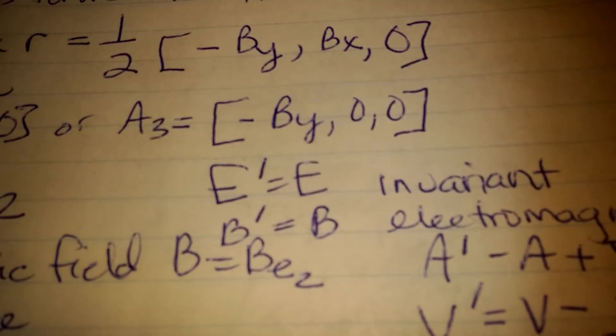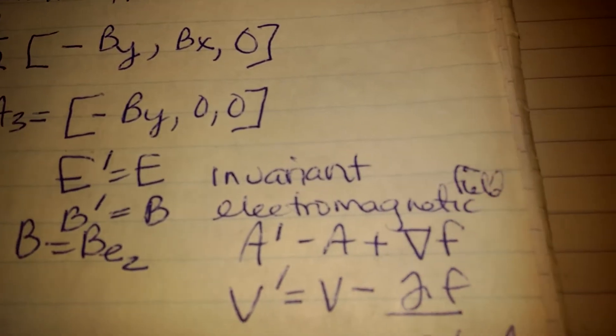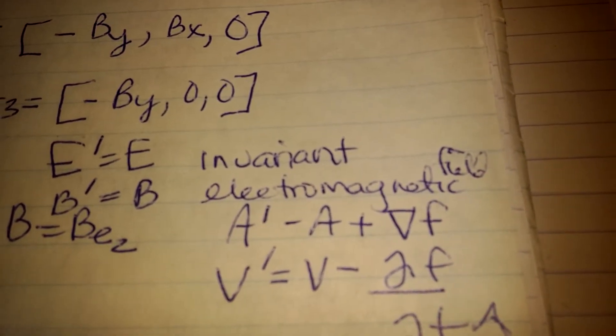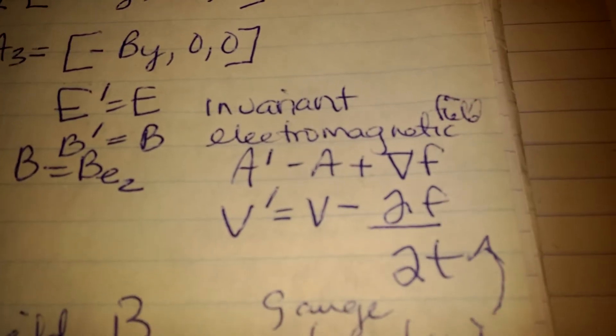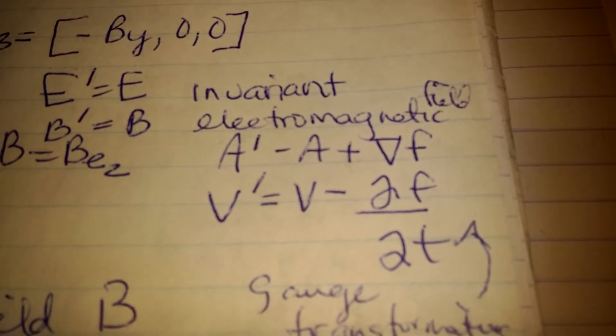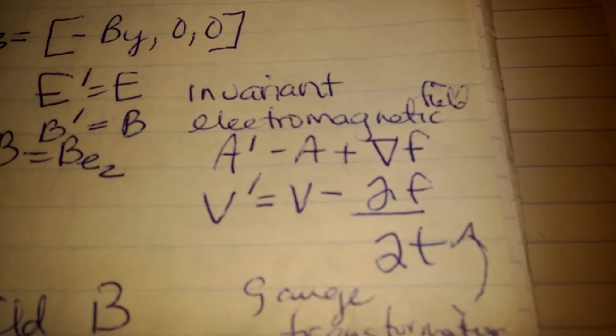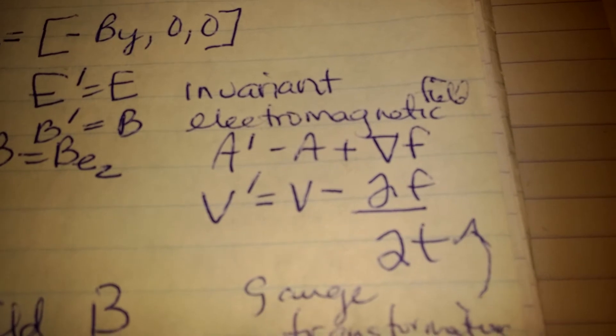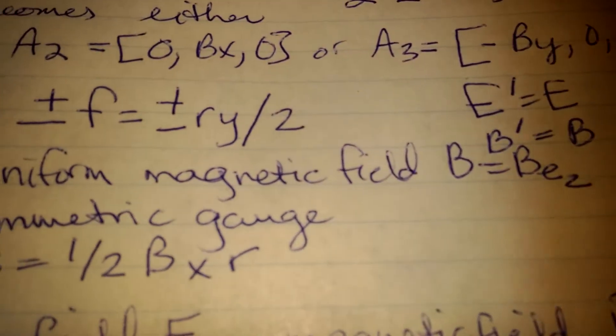Actually, that's not a 1, it's an apostrophe, sorry. Invariant electromagnetic field, a apostrophe minus a plus the upside down triangle f, and I'm not going to explain all this. You guys can look at it. There we go.